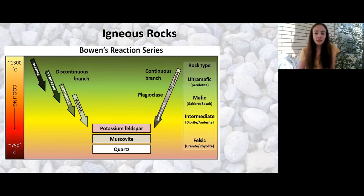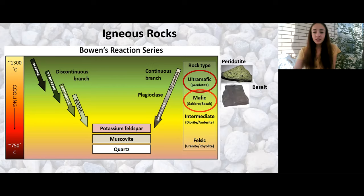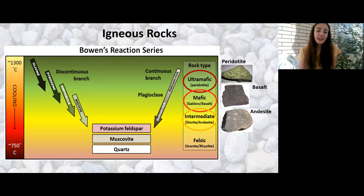When you talk about rock type in this series, the first minerals to precipitate out have the least silica content and are termed ultramafic. An example of this kind of rock is peridotite, which has a lot of olivine — which makes sense given that olivine is at the top of the series. Then you get to your mafic rocks like gabbro and basalt, which have a lot of pyroxene and amphibole. Then you reach intermediate rocks: andesite and diorite, where diorite is just the coarse-grained version of andesite — the same intermediate composition but cooled slowly versus fast.